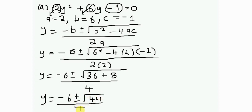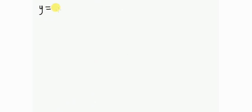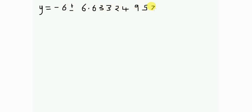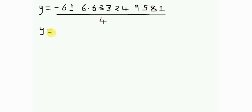The square root of 44 is approximately 6.6332495. So y equals negative 6 plus or minus 6.6332495, all divided by 4. I can write two equations from this expression. The first uses the positive sign: y equals negative 6 plus 6.6332495, divided by 4.